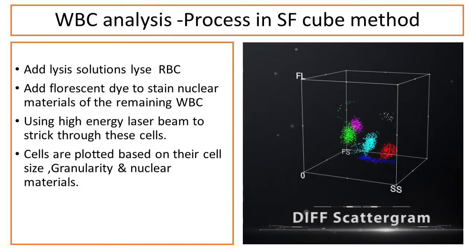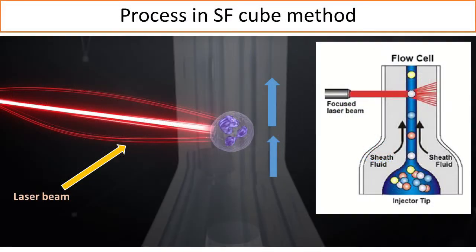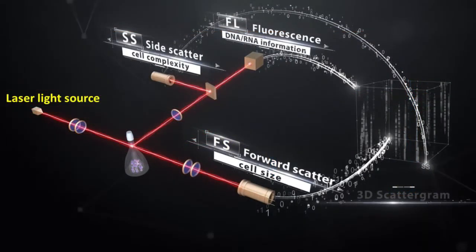In white blood cell analysis, a lysis solution is added to lyse RBCs, leaving remaining WBCs. A fluorescent dye is then added to stain the nuclear materials of the WBC. Cells are injected into a flow cell located in the optical path of a high-energy laser beam, which passes through the cells to measure cell size, granularity, and DNA or RNA materials via forward scatter, side scatter, and fluorescent signals respectively.